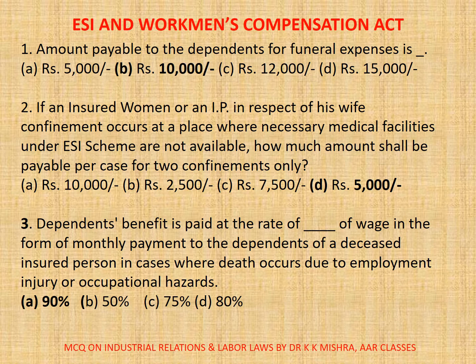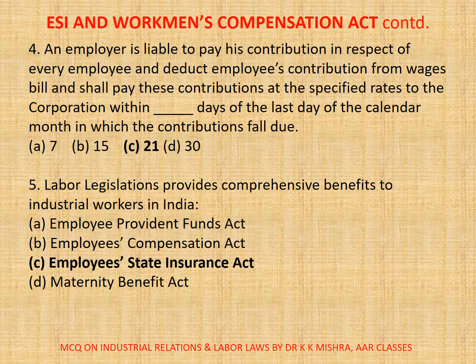Question 3. Dependents benefit is paid at the rate of dash of wages in the form of monthly payment to the dependents of a deceased insured person, in cases where death occurs due to employment injury or occupational hazard. A. 90%; B. 50%; C. 75%; D. 80%. Correct option is A, 90%.